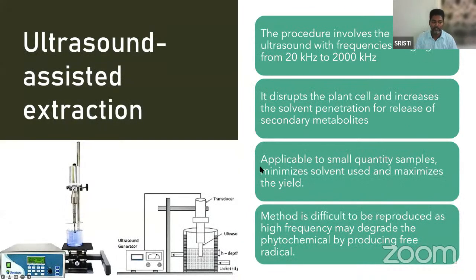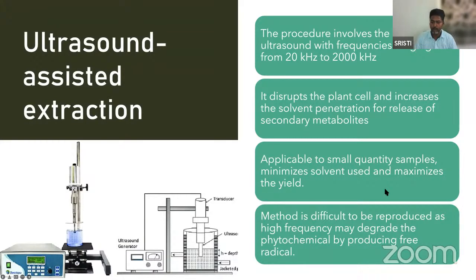The next is ultrasound-assisted extraction. This procedure uses ultrasound with a frequency range from 20 kHz to 2000 kHz. It disrupts and breaks down the plant cell wall and increases solvent penetration for the release of secondary metabolites. Applicable to small quantities of samples, uses less solvent, and yield is maximum. A major disadvantage is that high frequency may degrade the phytochemical by producing free radicals.